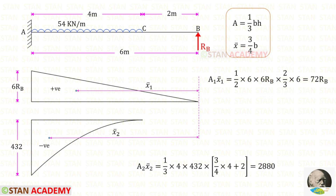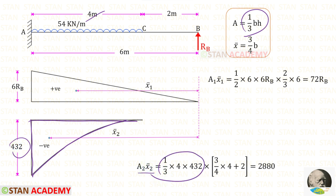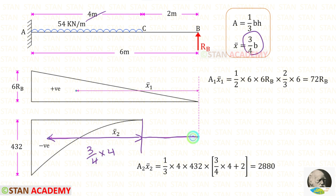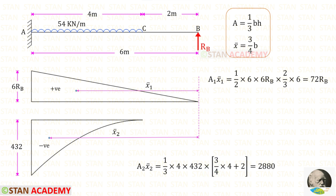Now let us find Area 2 and X2 bar. We know that this is a second degree parabola. The area formula is 1/3 into BH. Here the breadth is 4 and the height is 432, so this gives us the area. For X2 bar, the centroid distance about the right is 3/4 into breadth. Here the breadth is 4, so 3/4 into 4, and we also have to add the remaining distance which is 2, giving us 3/4 into 4 plus 2.